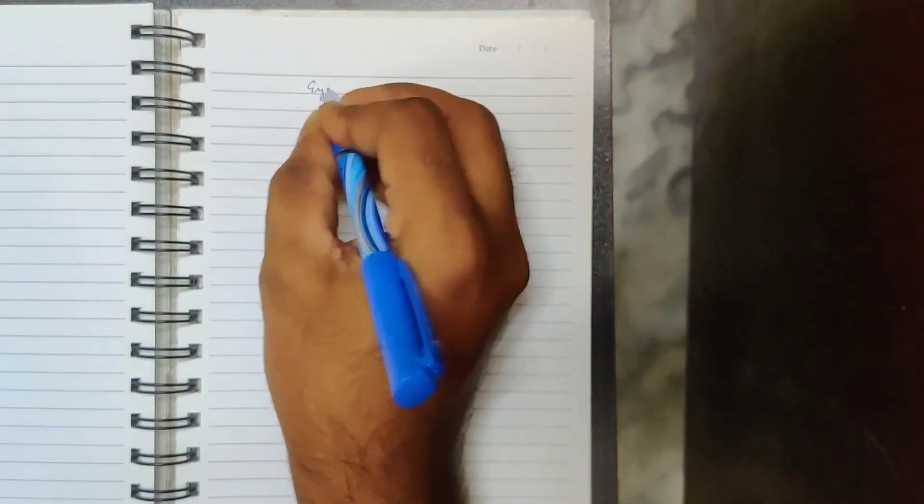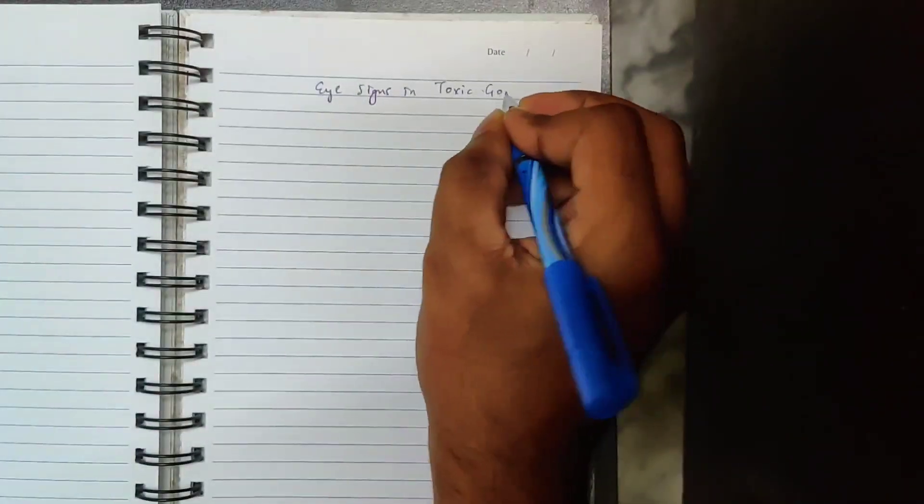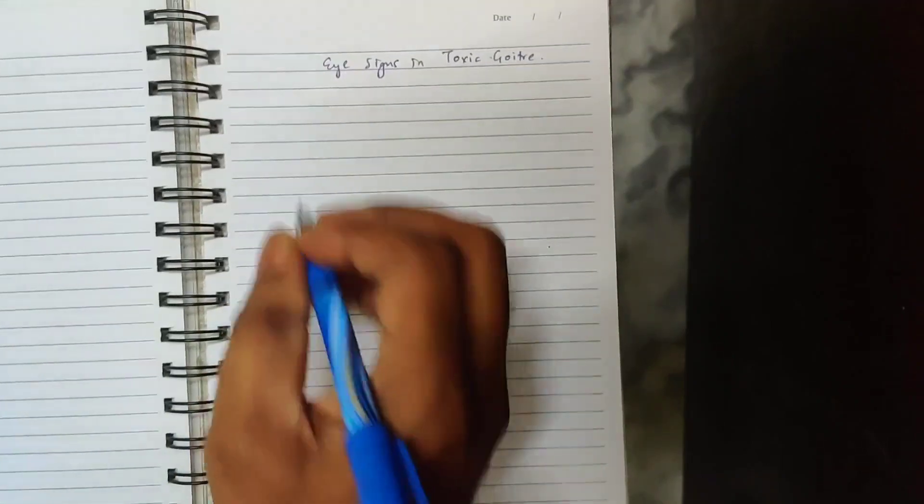Hi everyone, today I'm going to tell you the mnemonic of how to remember eye signs in toxic goiter. Basically, there are many eye signs, but you have to remember only the five important eye signs which I will be describing now.